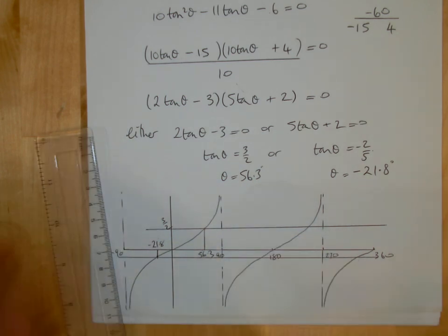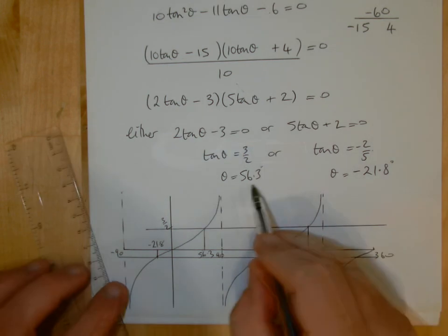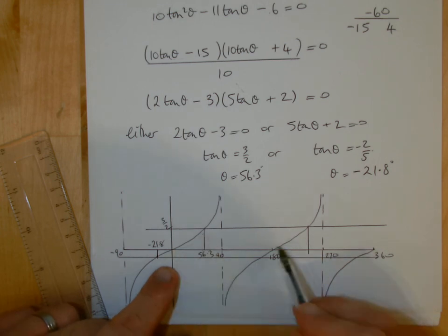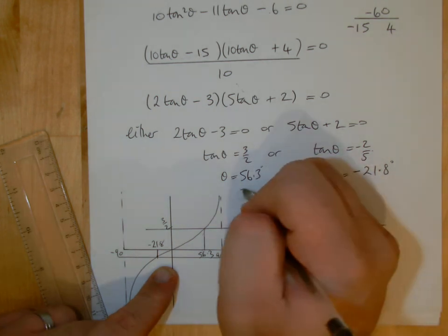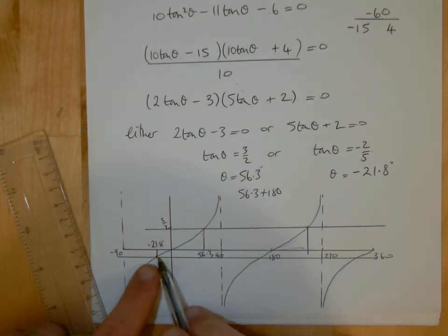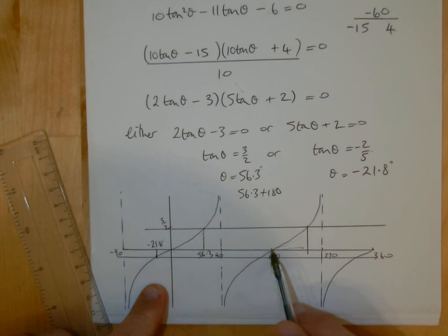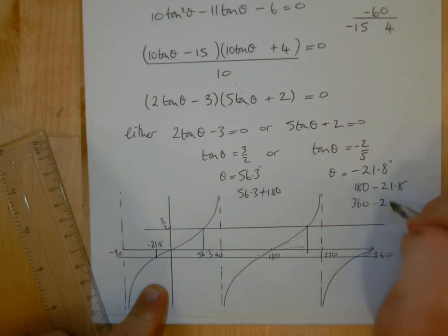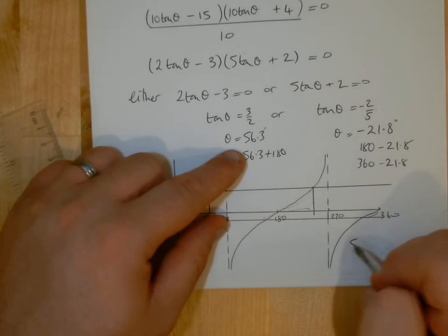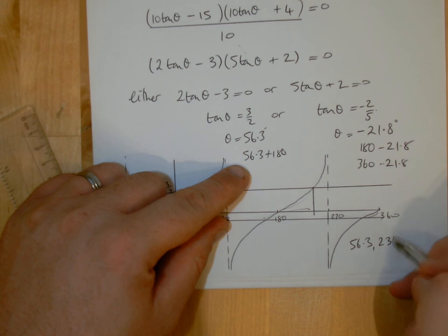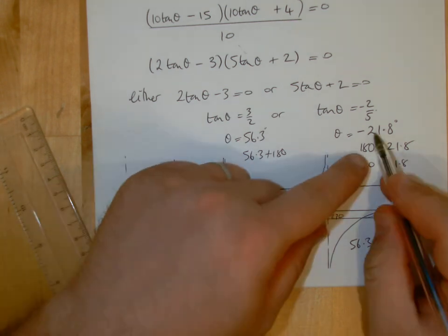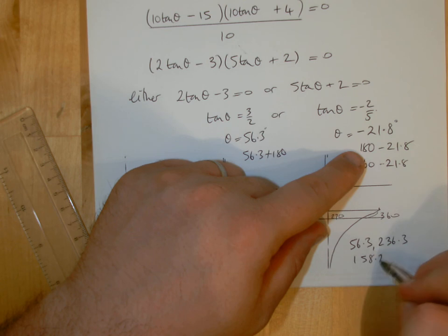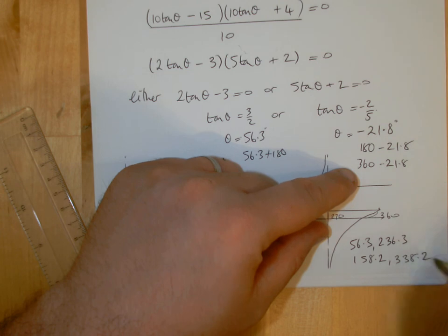So 56.3 enables me to get the other results. For the first one, you have 56.3, and then because I'm going across 56.3 for the rise of the curve, I've got to do 56.3 + 180. And for -21.8, I'm going across to the left from 180, so 180 - 21.8. I'm going to go back from 360, minus 21.8. So it enables me to get all my results: 56.3, 236.3 when I add that on, -21.8 disappears because that's outside our range. We're going to have 158.2 and 338.2.